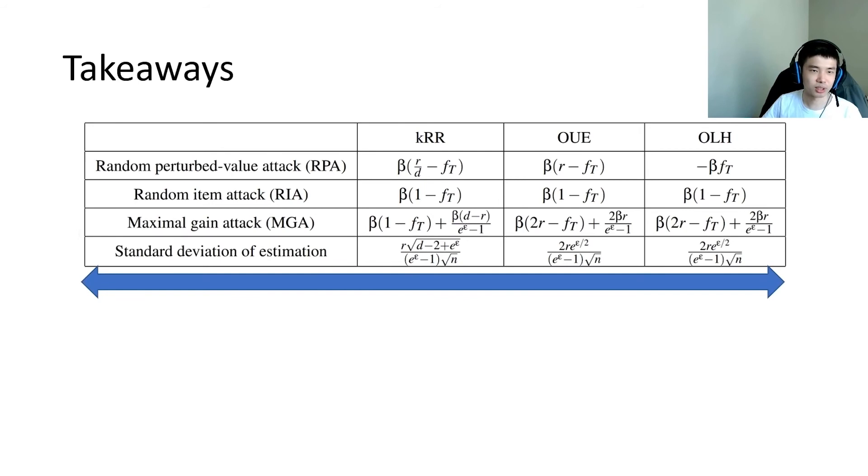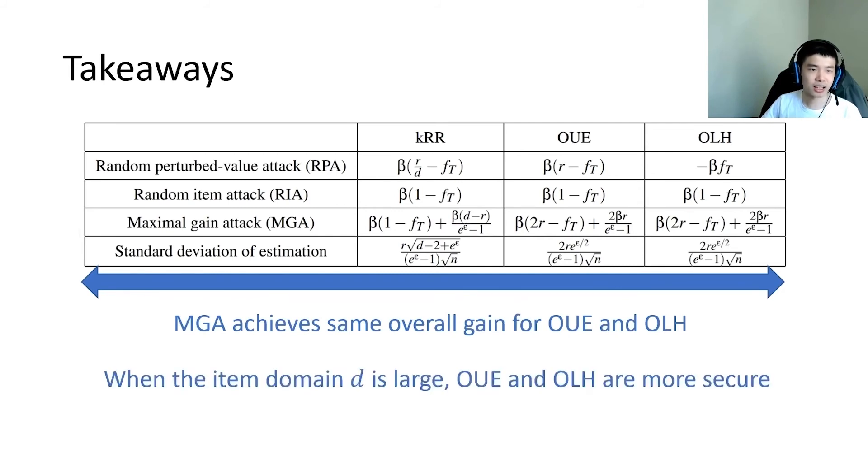Comparing the different protocols, we can see that MGA achieves the same overall gain for OUE and OLH. This means that they have the same level of security. We also notice that when the item domain d is large, the overall gain of MGA is larger for KRR than that for OUE and OLH. This implies that OUE and OLH are more secure when there are many items.